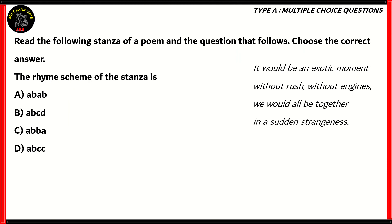Now let's look at the final question for the day. Read the following stanza of a poem and the question that follows — choose the correct answer. This is an extract-based question; however, we have a poem here by Pablo Neruda. In poems, questions usually ask about meanings of words, descriptions, and also rhyme schemes. We need to find out the rhyme scheme of the stanza. Is it ABAB, ABCD, ABBA, or ABCC? Using letters A, B, C, D represents different sounds used at the beginning of each verse.